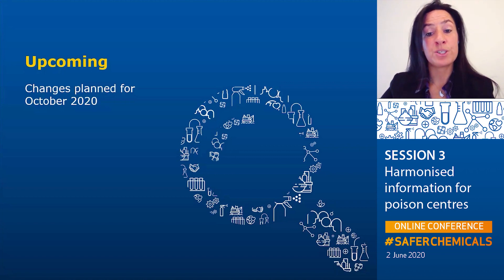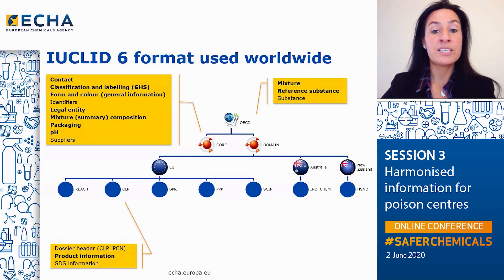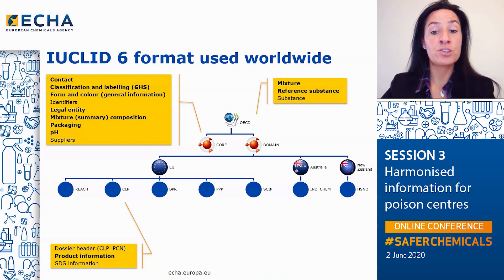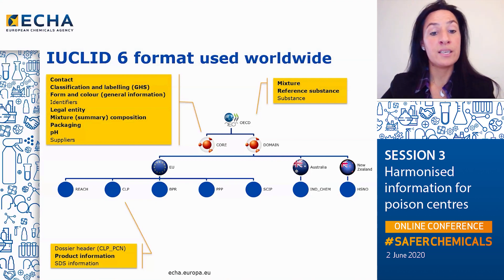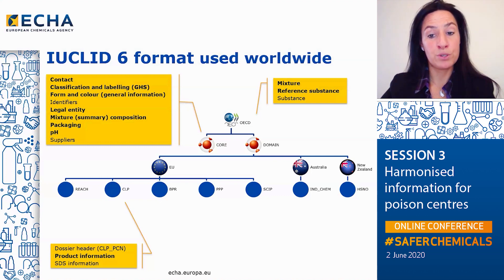Let's move to the upcoming changes in the Poison Centers IT solution planned for October 2020. The Euclid format represents the basis the Poison Centers format is built on. It has been developed by ECHA in collaboration with the OECD and it promotes the harmonization of chemical data. It is used for the preparation of dossiers for different legislations in Europe, as well as in Australia and New Zealand. Once a year, in October, the Euclid format gets updated and the updates affect all the Euclid users, including the Poison Centers users.